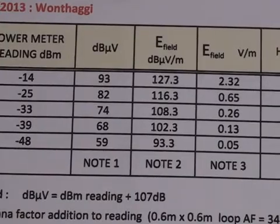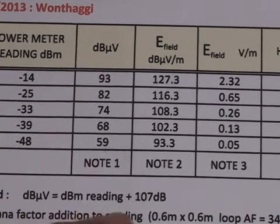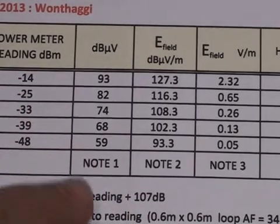The first thing we need to do is convert dBm as read on the power meter, 50 ohms, into dB microvolts. And this is done by adding 107 dB to whatever the dBm reading is.